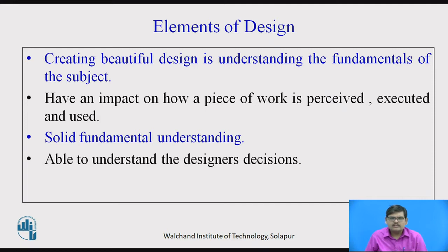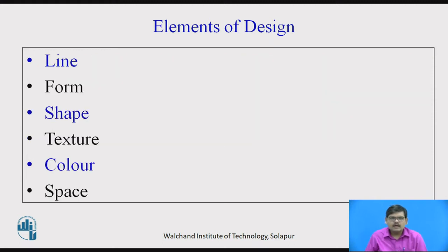Why a designer has given a particular shape, a particular color, a particular texture to that particular design, we should be able to understand. Elements of Design plays a wider role in the appearance as well as functionality of that particular product. The elements of design are: Line, Form, Shape, Texture, Color, and Space. These are some of the important elements of design that need to be included in a particular design, one or all, to get a better successful product.